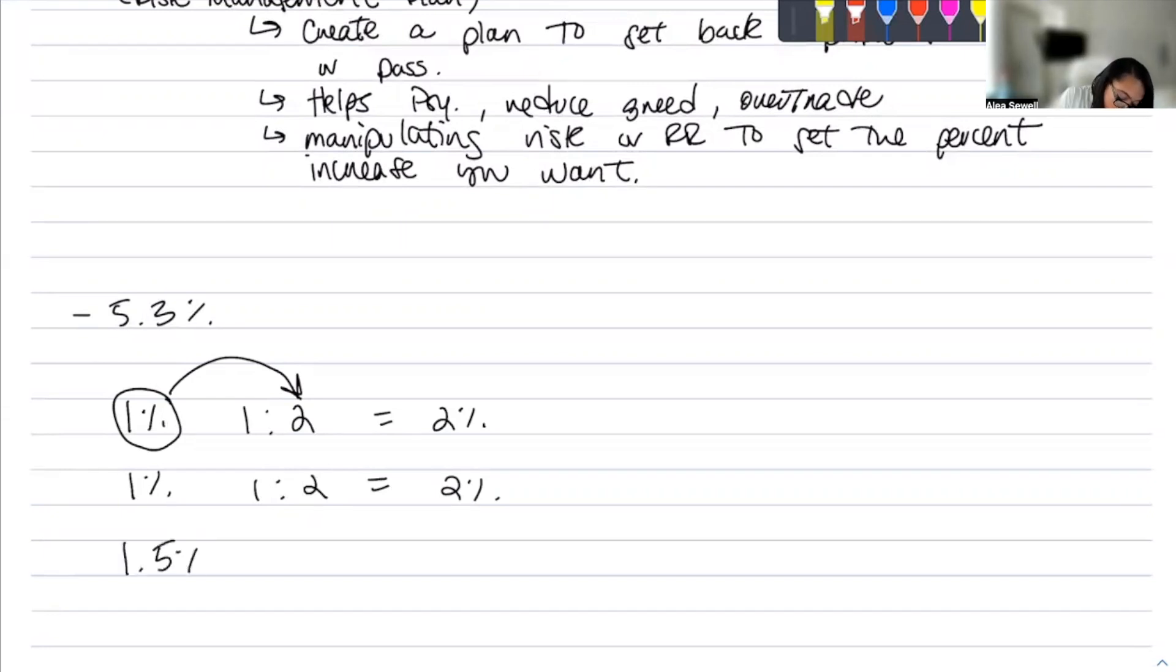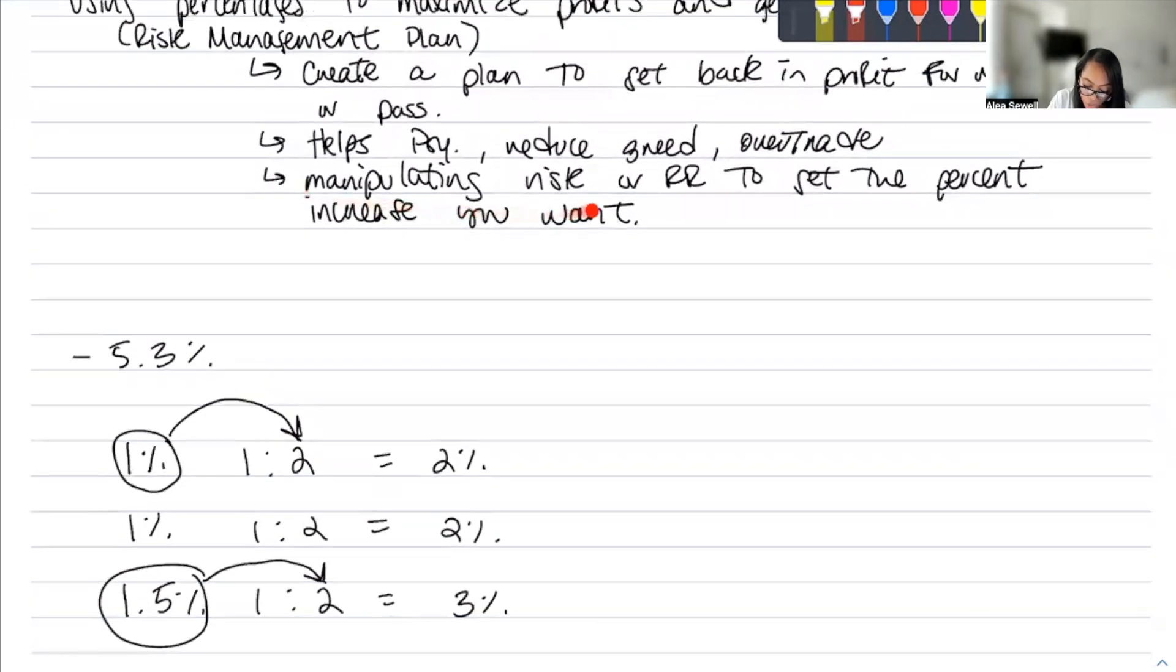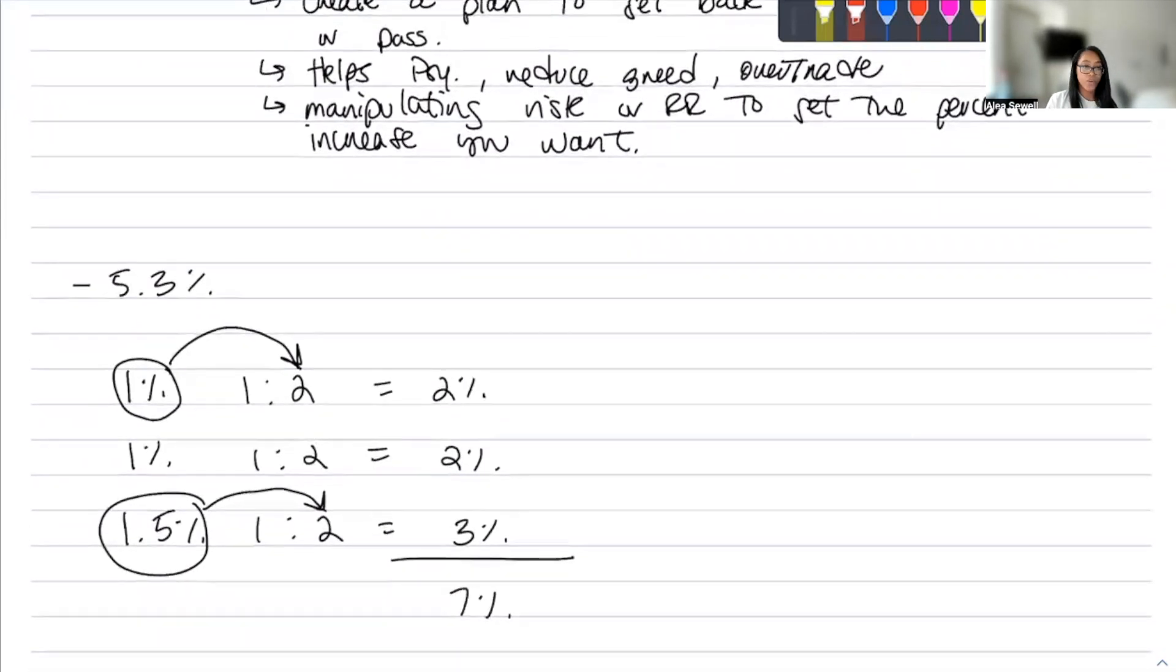And for the third trade, let's get a little bit more confident. 1.5%. What I like about risking just a simple 0.5 extra, you get a 1% extra reward. And why is that? Because if you take 1.5% times 2, you get 3%. And that's how manipulating your risk or reward to get the percent increase you want. So just by increasing my risk by 0.5, I was able to get 3% versus 2. So now we add all these up together, we're up 7%. We only needed 5.3. So we got a little bit more than what we needed.